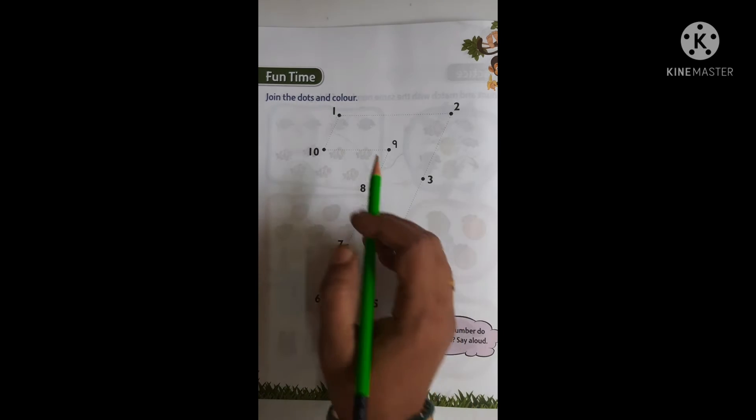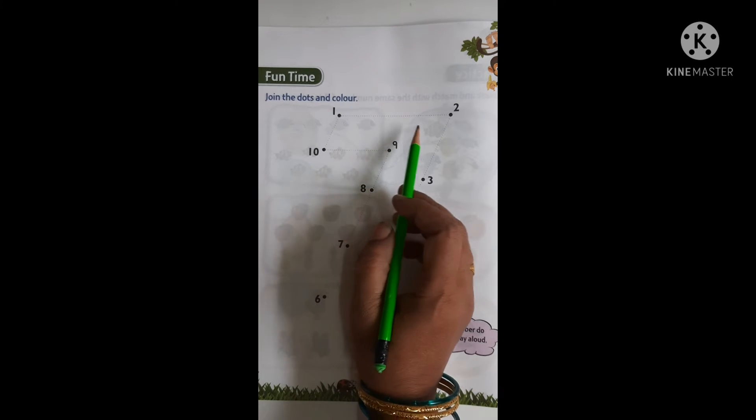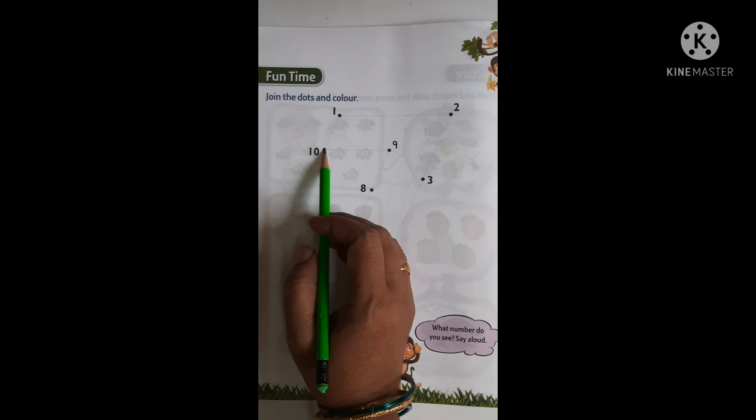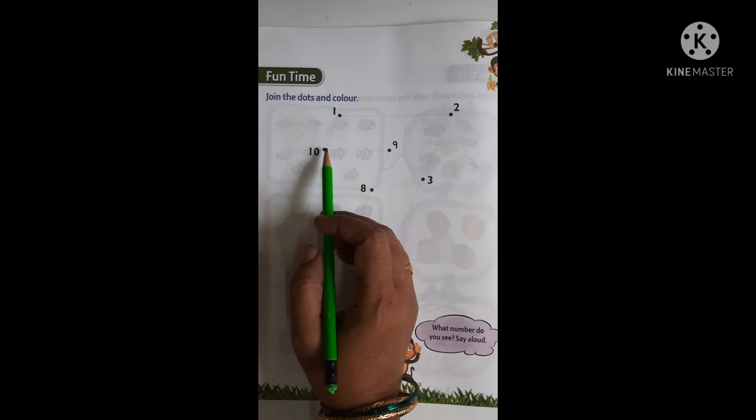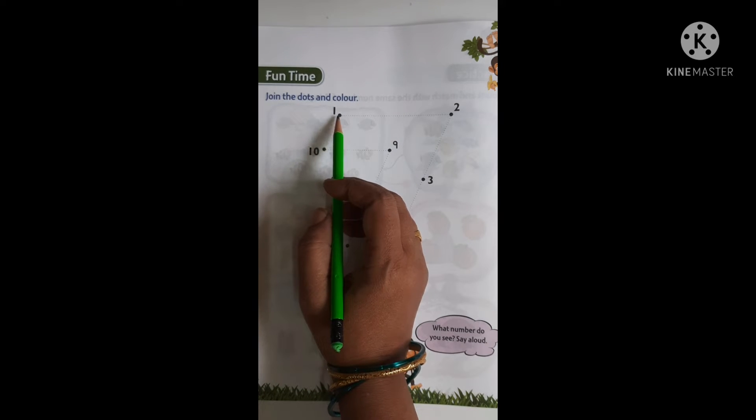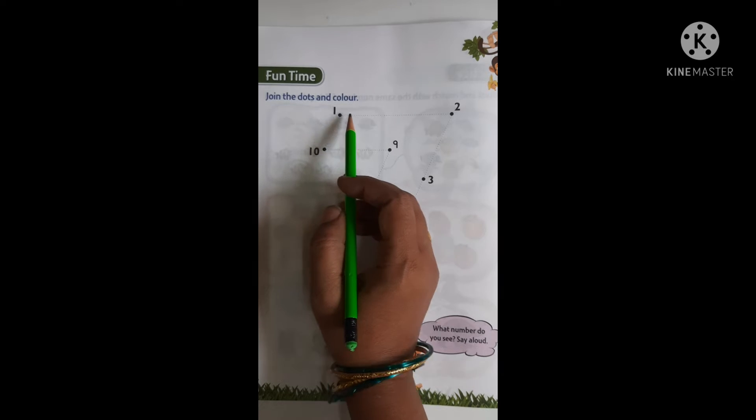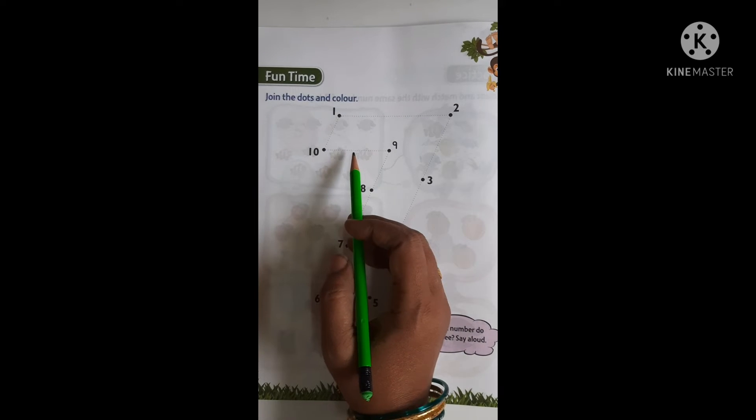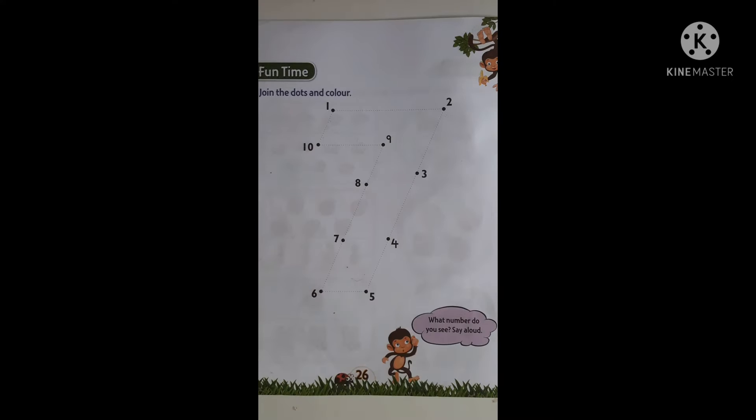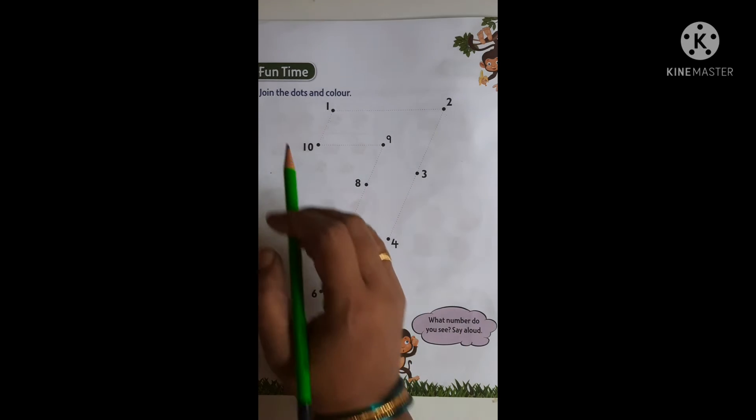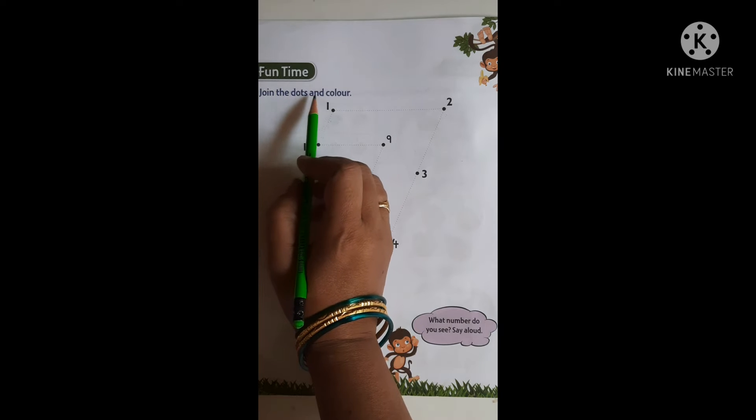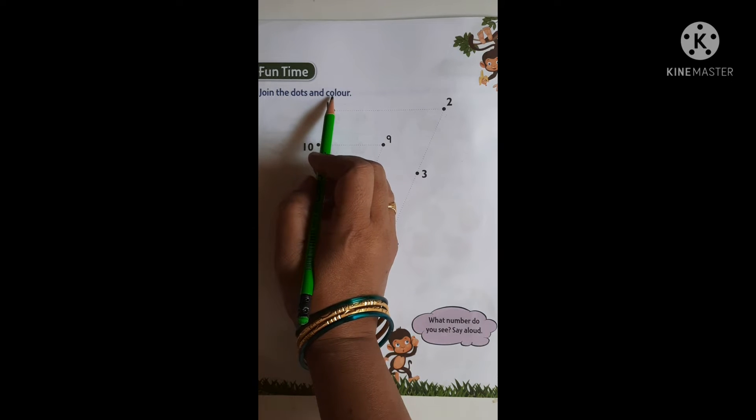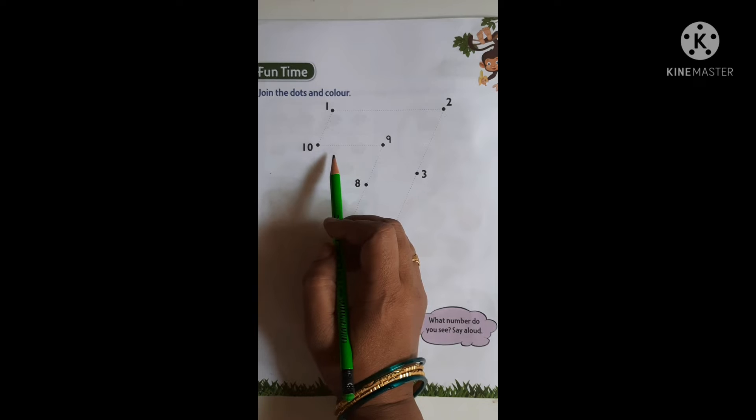Now, we have to join the numbers from 1 to 10. You have to start from the number 1. We have to go in sequence from 1 to 10. Kids, are you ready to trace? Join the dots and color. So, let's start from 1.